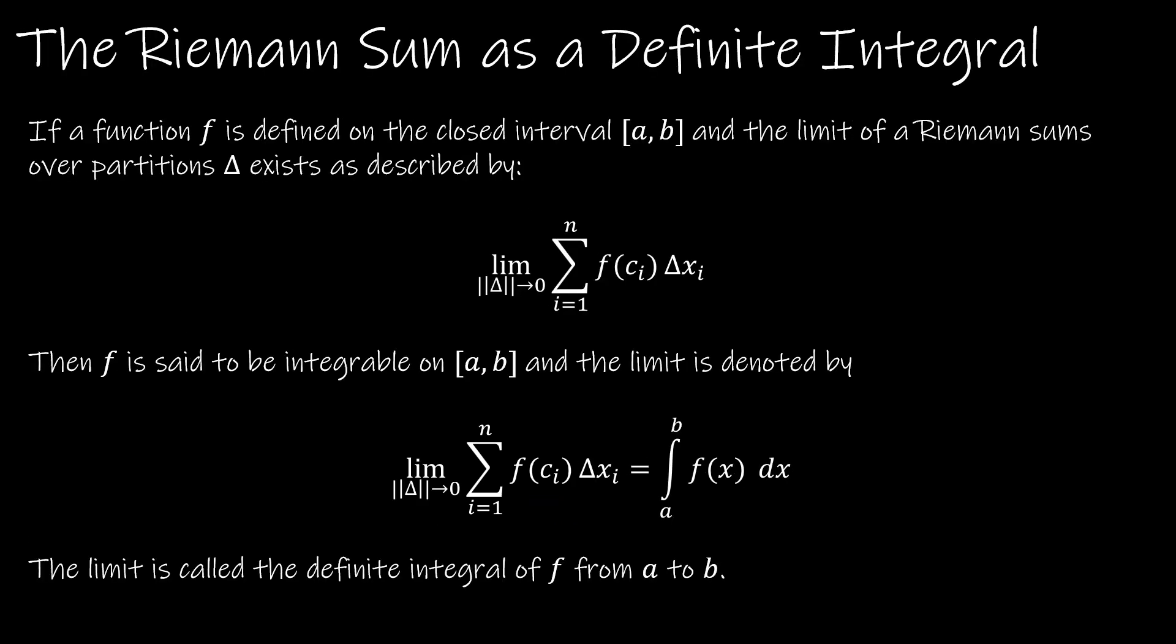So now let's just get to the good stuff. We know that this defines our Riemann sum, and if that function is defined on the closed interval a, b, and the limit of the Riemann sums is given by that function that I just circled, then f is said to be integrable on a, b, and the limit, this limit that is the same as the limit up here is described by the definite integral from a to b of f(x) dx.